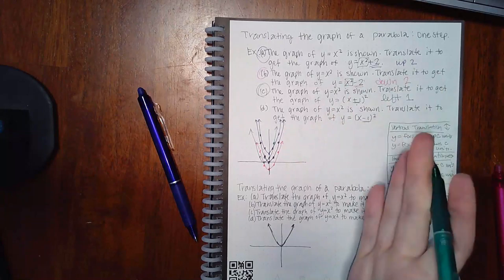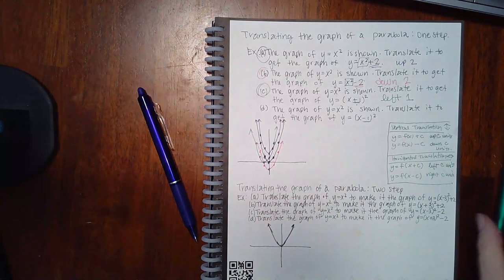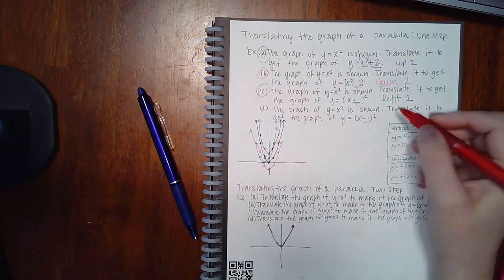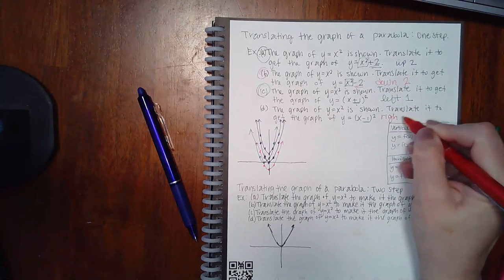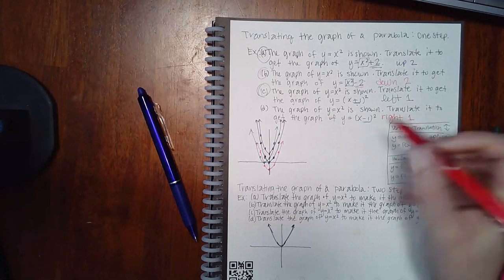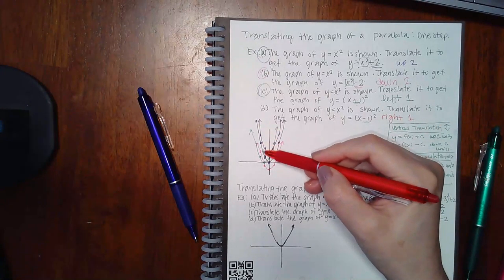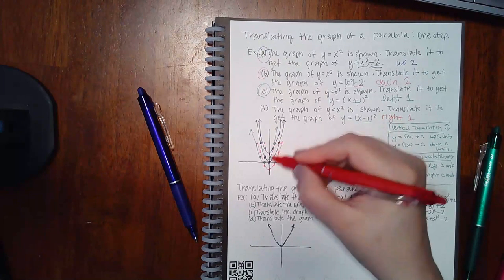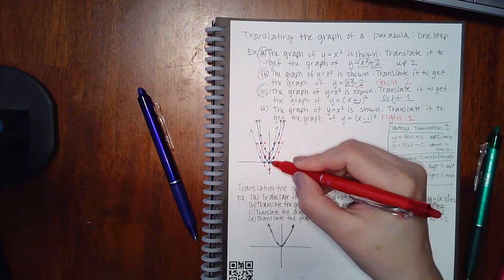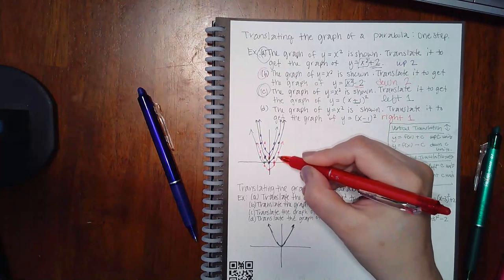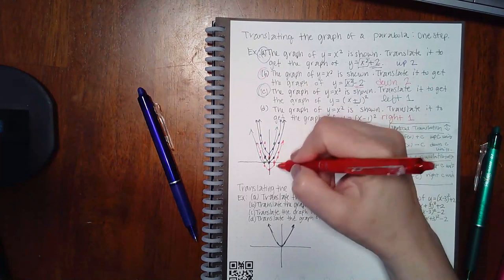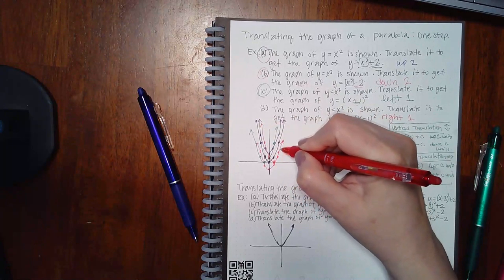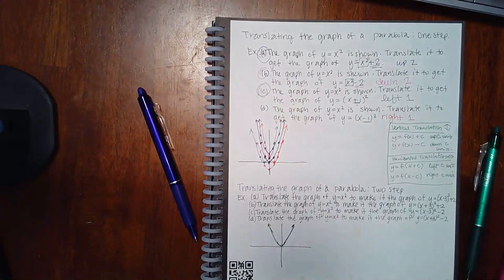For the last one in red: minus one on the inside means this graph goes to the right one unit. Again I'm taking all of the original points and moving them to the right — this goes here, this goes here, this goes here — and then my parabola shifts over to the right.